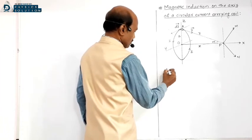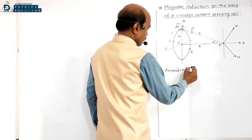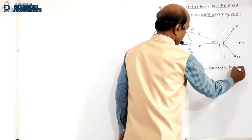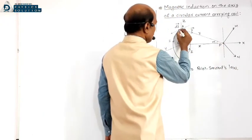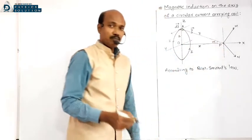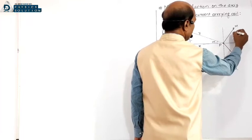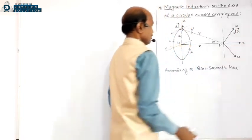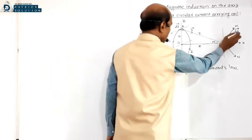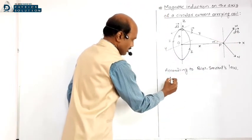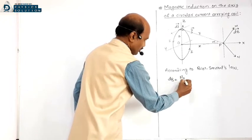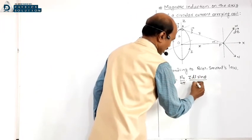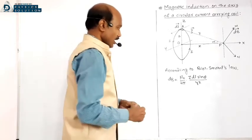According to Biot-Savart law, the magnetic field produced at P due to this small element dL — that is dB — its direction will be along PM. The magnitude is given by: dB = (μ₀/4π) × (I dL sinθ) / r².